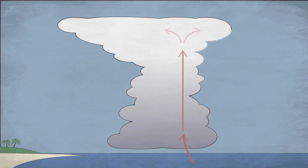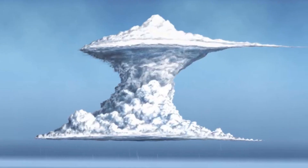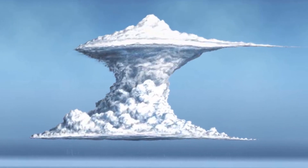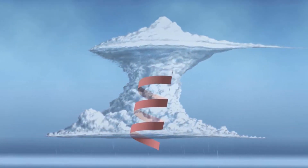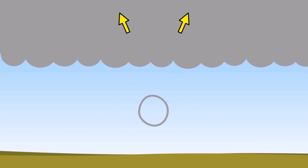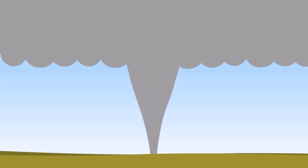A supercell is a thunderstorm that has a strong updraft that feeds into the storm and fuels its growth, as well as a downdraft that expels cool air from the storm. This updraft and downdraft interact inside the supercell and create rotation. The strong updraft interacts with the horizontal column of air and physically turns it to be vertical, creating a funnel cloud. The funnel of air moves down until it touches the ground, and this is how a tornado is formed.